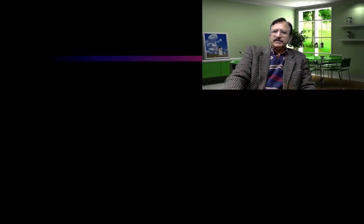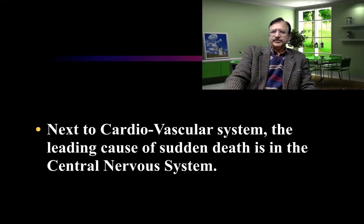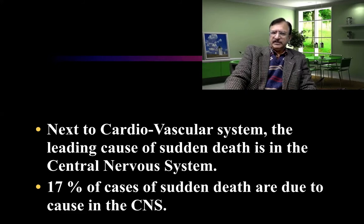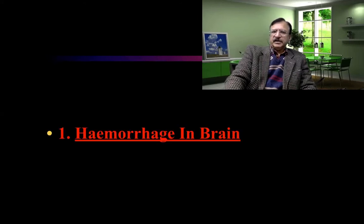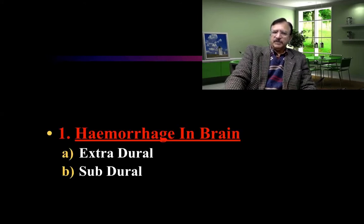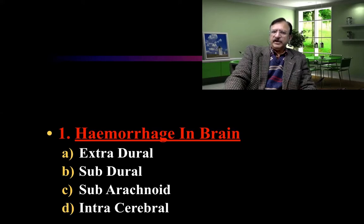Next to the cardiovascular system, the leading cause of sudden death is in the central nervous system. Seventeen percent of cases of sudden death are due to causes in the central nervous system, such as hemorrhage in the brain — extradural, subdural, subarachnoid, or intracerebral.